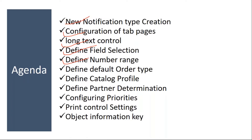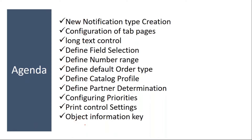How the number range is assigned to the notification type. Define default order type — when you convert the notification to an order, what order type it has to propose by default, how to configure that. Then catalog profile, how to assign a catalog profile to the notification type, then partner determination procedure, then configuring the priorities, print control settings, and object information key assignment.